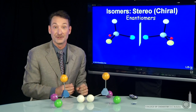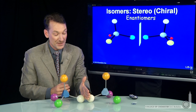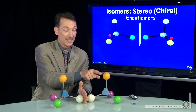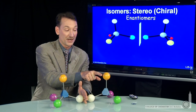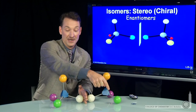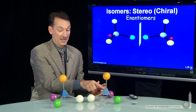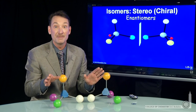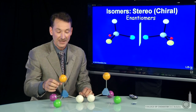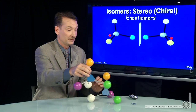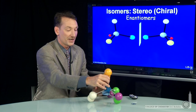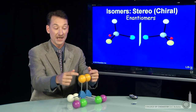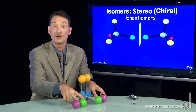Here I have two models where if I placed a mirror plane right here, these molecules represent mirror images — there's a direct reflection here to here, here to here, here to here, here to here. So these molecules are mirror images. Are they the same? If I take this molecule and try to superimpose it on this one, we find out they're not. Yellow and yellow match up, but green and purple don't.